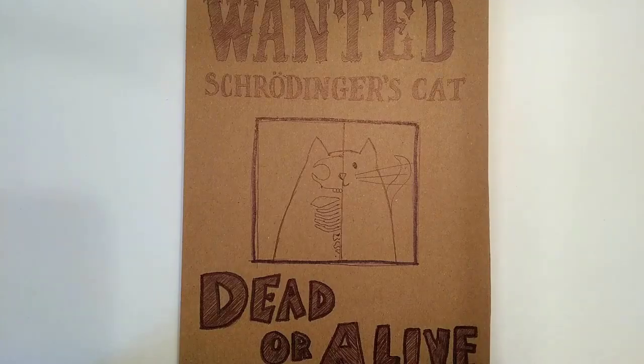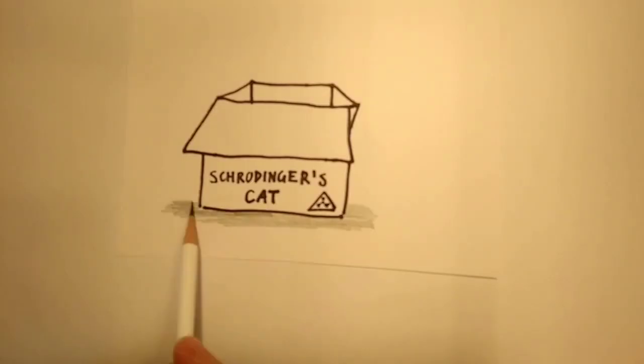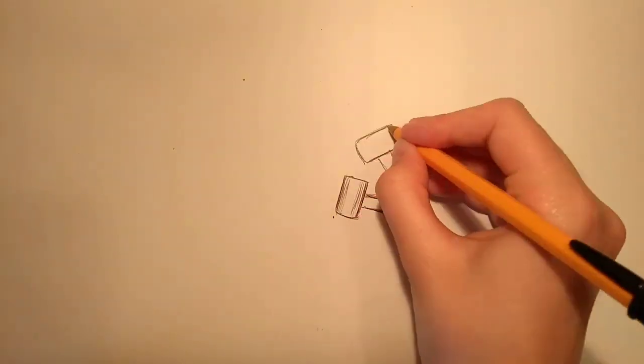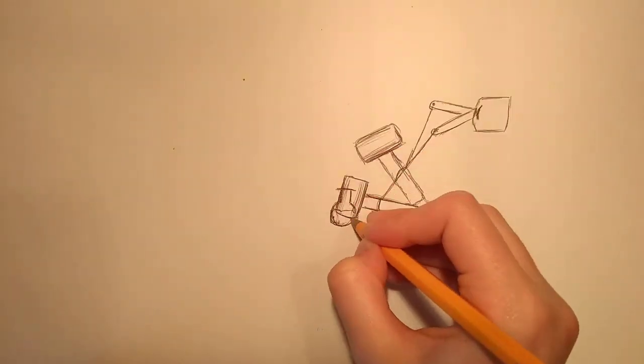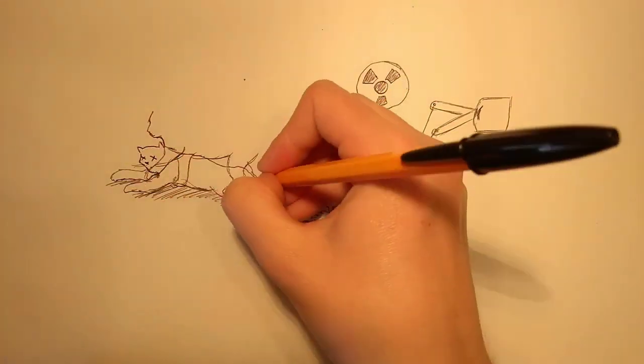The famous thought experiment with Schrödinger's famous cat used the concept of superposition to demonstrate exactly that. The states of being alive or dead were directly superposed, and the cat's fate was undecided so long as the box remained closed.